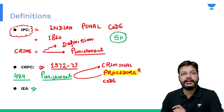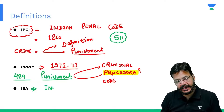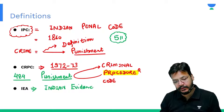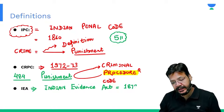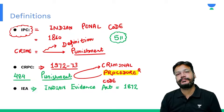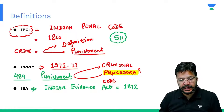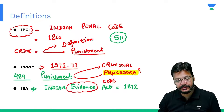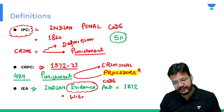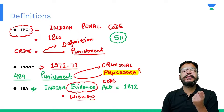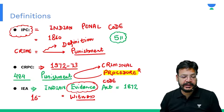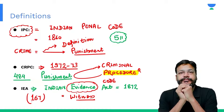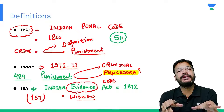Now I would like to add one more thing — IEA, the Indian Evidence Act. IEA is Indian Evidence Act and it was implemented in 1872. The IEA is all about evidences and witnesses. Every witness and every evidence is a part of Indian Evidence Act. The number of sections in the Indian Evidence Act are 167.